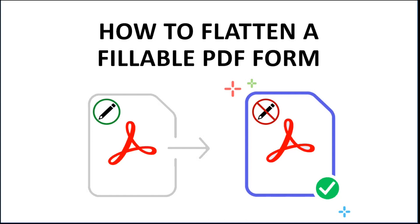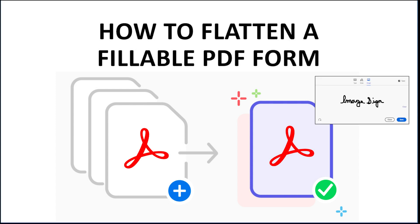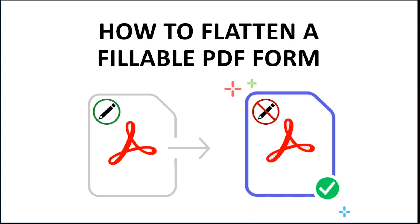Creating a flattened PDF is important if you want to merge multiple files into one PDF document, or if you want to be able to insert an image of your handwritten signature or a hand-drawn signature using a mouse. For performing any of these tasks, you will first need to create a flattened version of the fillable PDF form.